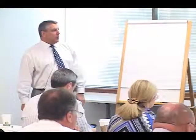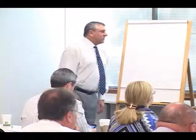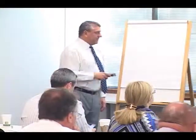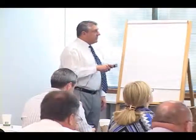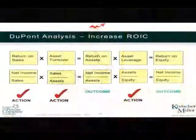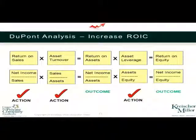I want to show you a quick formula that I think is really interesting. It's called a DuPont analysis. This is ratios on your balance sheet, and it speaks to a lot of what we just talked about on the prior slide — you can see how the math works. These are all ratios; many of you have seen them before.